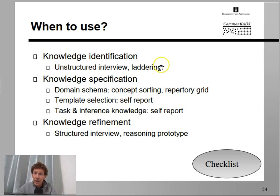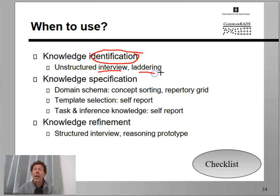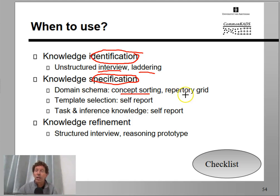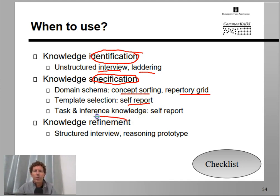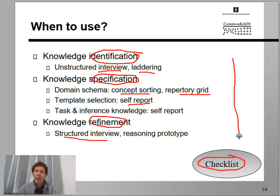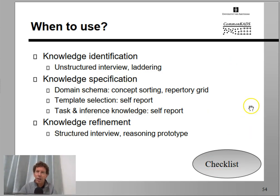Be aware of these three phases. The first phase is knowledge identification, where you're trying to identify the basic concepts in the domain — unstructured interviews and maybe lettering. Then you specify more details of the knowledge using card sorting, repertory grids, and self-reporting. Finally, in the knowledge refinement stage, when you think you're almost done, you can turn to structured interviews again. Use this checklist of phases to plan your own set of interviews and the techniques you're going to use.